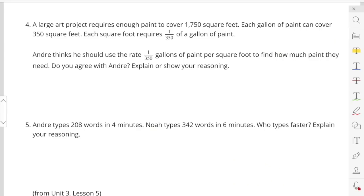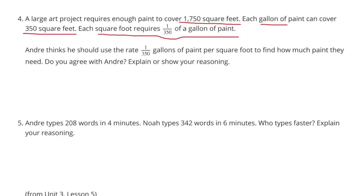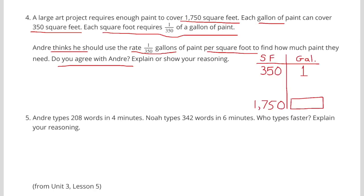Number 4. A large art project requires enough paint to cover 1,750 square feet. Each gallon of paint can cover 350 square feet. Each square foot requires 1/350th of a gallon of paint. Andre thinks he should use the rate 1 over 350 gallons of paint per square foot to find how much paint they need. Do you agree with Andre? Explain or show your reasoning. Well, first of all, yes, I agree.